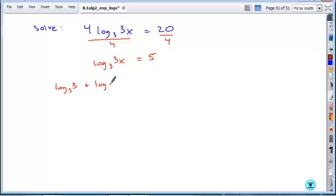So you get 1 plus log 3 of x is equal to 5. We can subtract a 1 from both sides. Log 3 of x is equal to 4.